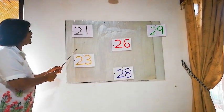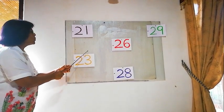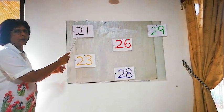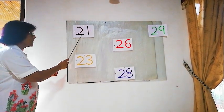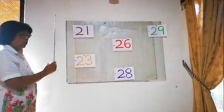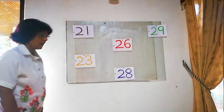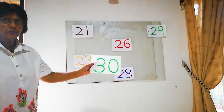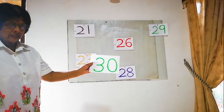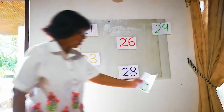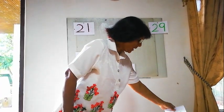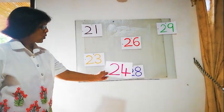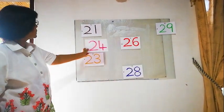22. The number after 21 is 22. Now we have to find 22. Is this 22? Is this 22? No, this is not 22.